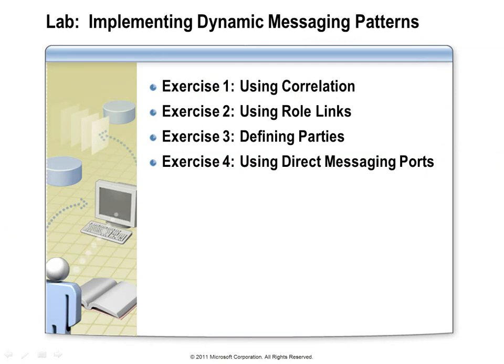You will be working with the Northwind solution in this lab. You will modify the route order orchestration to send out a shipping request and receive an acknowledgement back, setting up correlation for that, then deploy the orchestration and bind the send and receive ports to corresponding physical ports. After verifying correlation is working, you'll revisit the solution and work with an orchestration that handles shipping automatically using a role link to direct the shipping request to the correct vendor. You'll define three parties in the Administration Console, redeploy the solution, run tests, and then modify the route order orchestration to call the shipping orchestration using direct binding with a shared port.